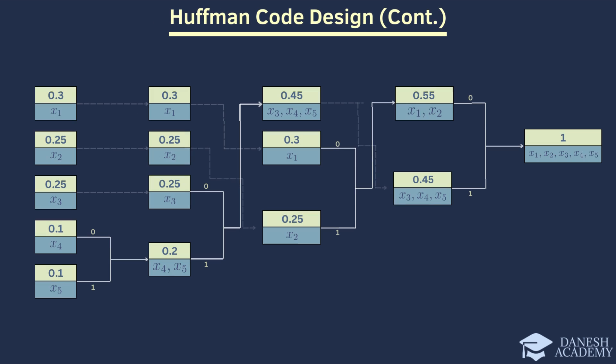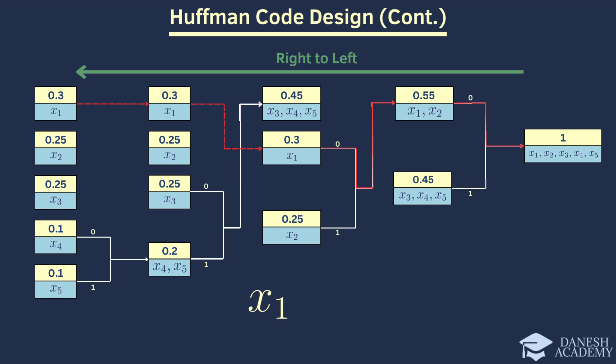Now, let's discuss how to interpret the codewords. First, we examine the defined paths. To read the codeword, we must read from right to left. For example, for the first symbol X1, we follow the path marked with a red line. Reading from right to left, we find the codeword 0,0. Similarly, for X2, we observe that there are two codewords, 0 and 1, along the path of X1. Reading from right to left, we obtain the codeword 0,1. X3 follows a similar pattern with codewords 1 and 0 along its path, resulting in the code 1,0.